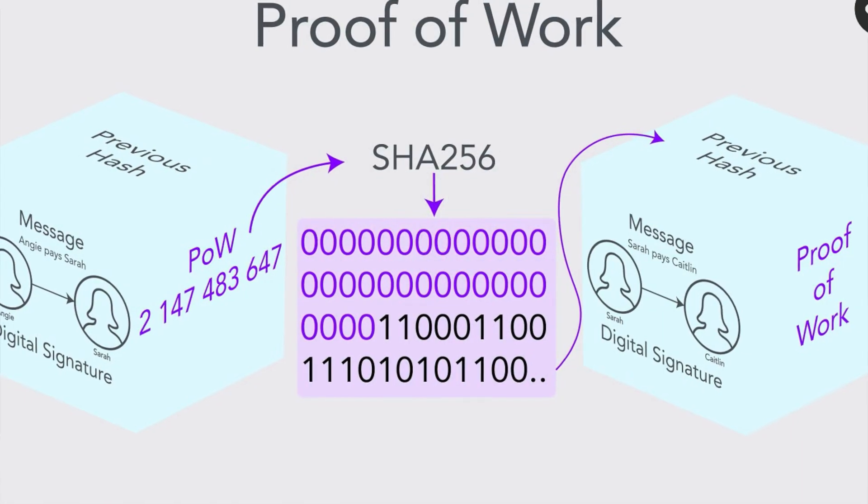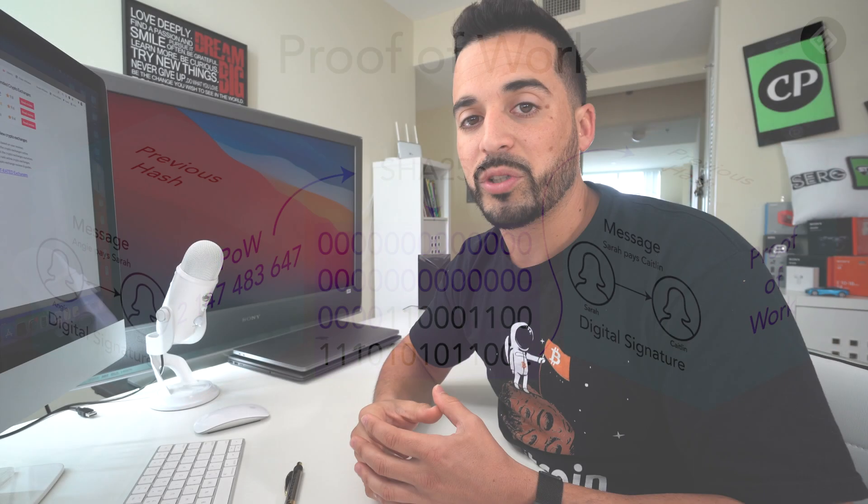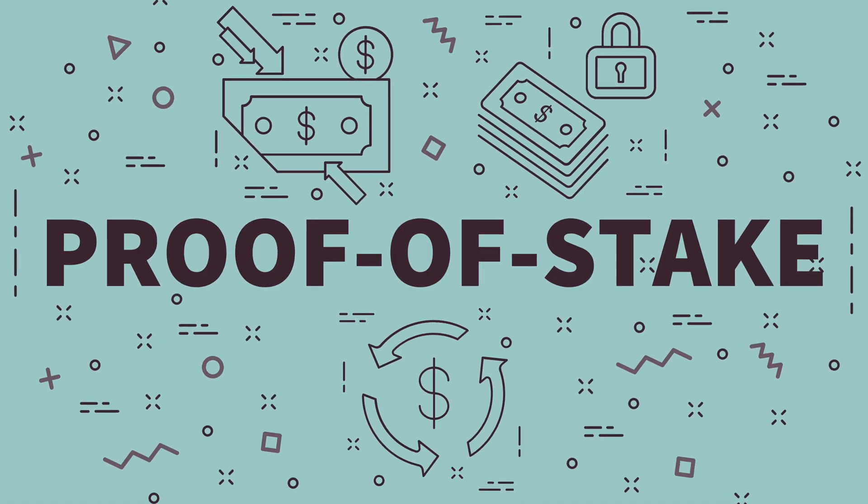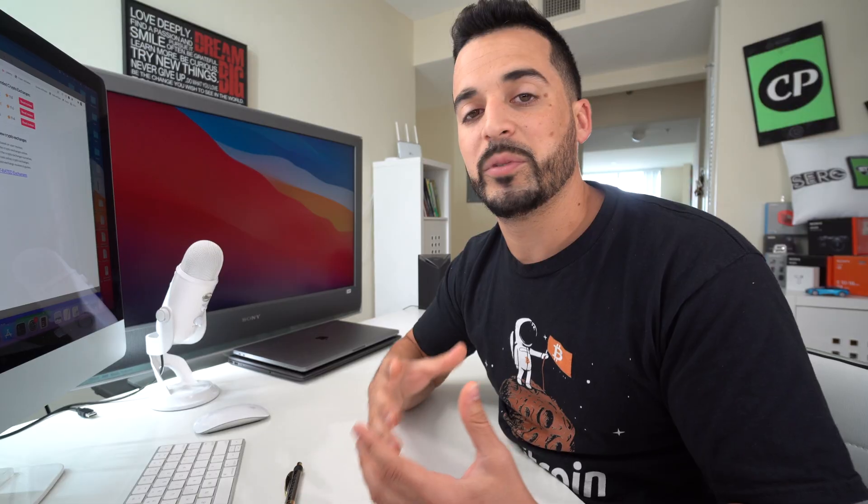To begin, the consensus mechanism is the mechanism which cryptocurrencies use in order to validate the block for the blockchain. The main two types are proof of work, which was the first one ever created and is the mechanism that Bitcoin uses, and proof of stake, which Cardano and other cryptocurrencies use. Ethereum is also trying to change from proof of work to proof of stake. Proof of stake was created to try and solve problems that proof of work was facing.